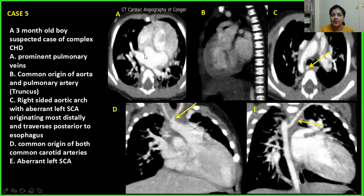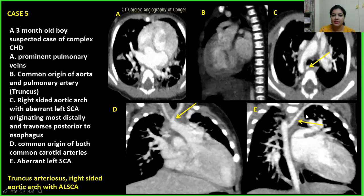Case 5: Prominent pulmonary veins were noted. There was a common origin of the aorta and pulmonary artery — truncus. A right-sided aortic arch with aberrant left subclavian artery was seen, traversing behind the esophagus, with common origin of both carotid arteries and the aberrant left subclavian artery. This was a case of truncus arteriosus with right-sided aortic arch with aberrant left subclavian artery.